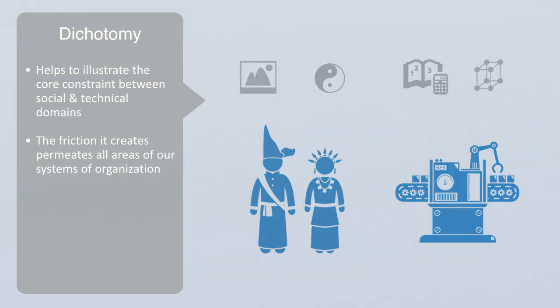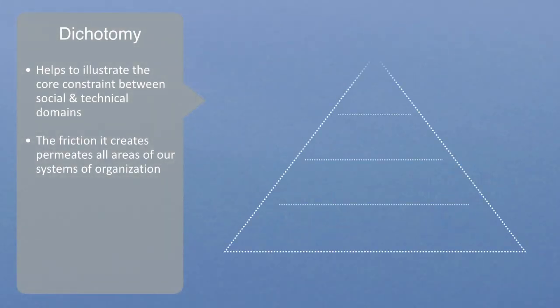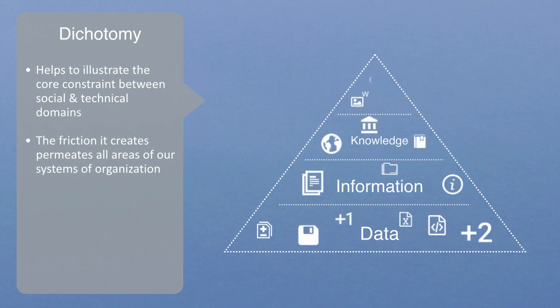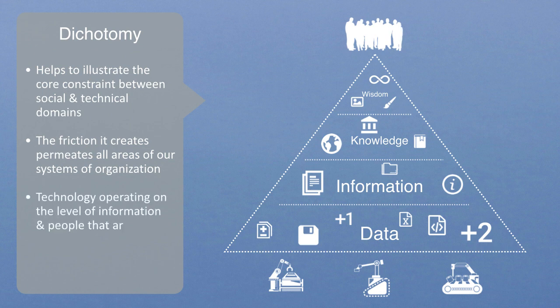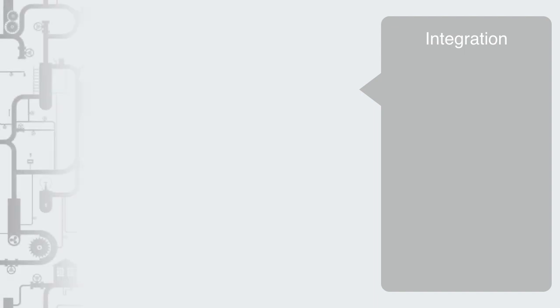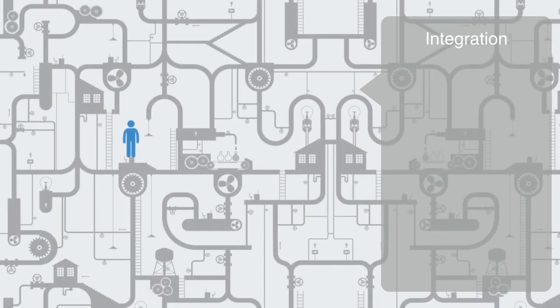One way of understanding and giving structure to this dichotomy is through the DIKW framework that we previously touched upon. The DIKW framework describes the hierarchical structure of information and captures the divide between technology that operates on the level of data and information on the one hand, and people that in advanced economies are increasingly required to perform knowledge work. When we overemphasize the technical domain, we may end up with a very technically efficient system, but it will also be alienating, leaving people feeling disenfranchised, and ultimately result in disengagement.